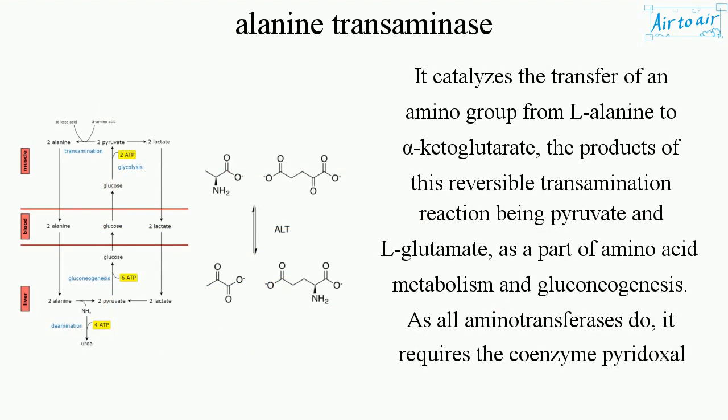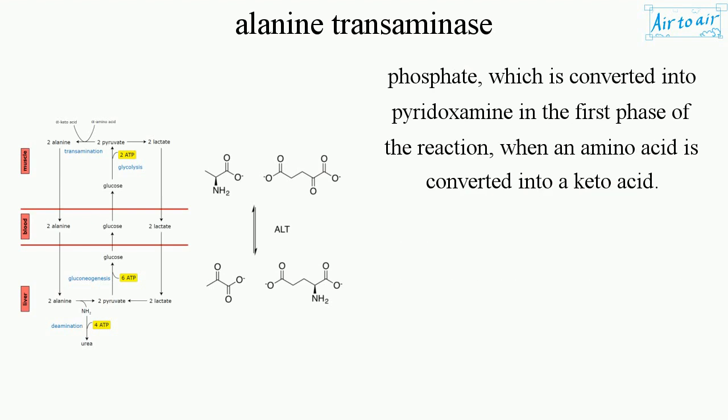It catalyzes the transfer of an amino group from L-alanine to alpha-ketoglutarate. The products of this reversible transamination reaction are pyruvate and L-glutamate, as part of amino acid metabolism and gluconeogenesis. As all aminotransferases do, it requires the coenzyme pyridoxal phosphate, which is converted into pyridoxamine in the first phase of the reaction when an amino acid is converted into a keto acid.